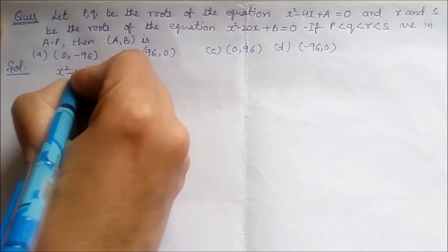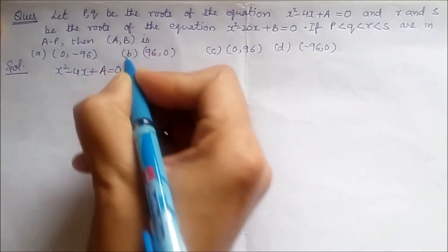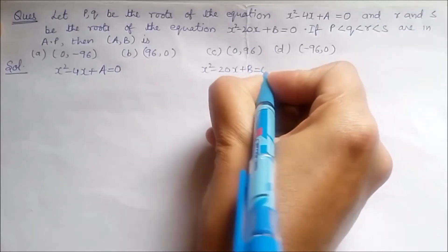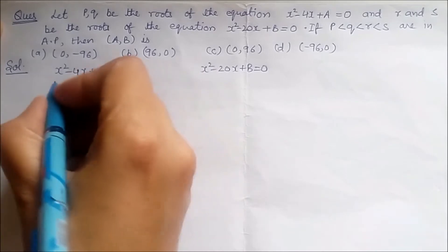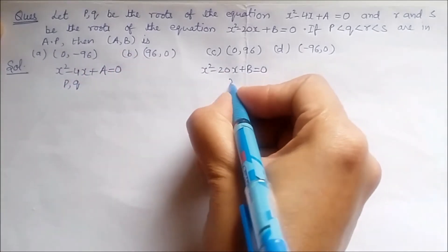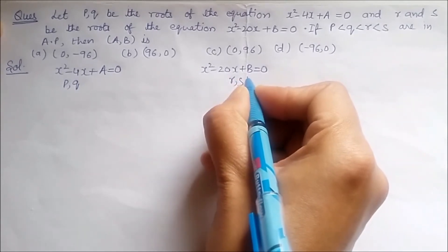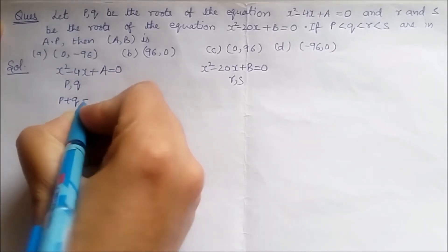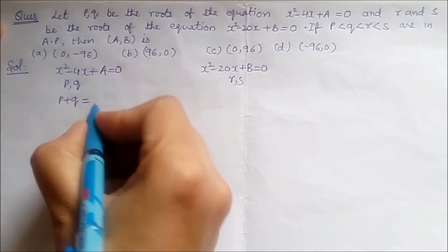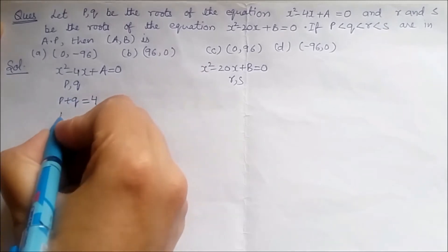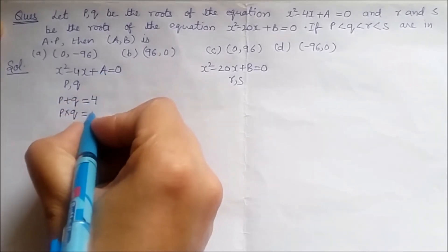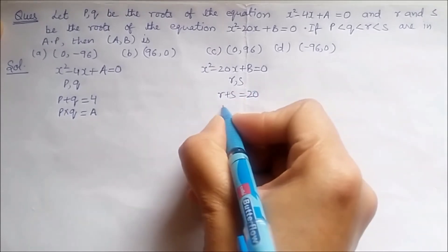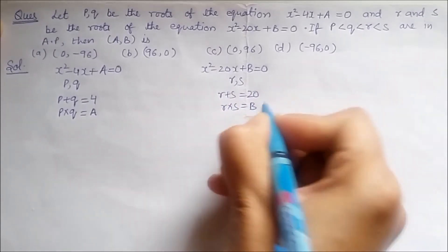We are given two quadratic equations: the first is x² - 4x + a = 0, and the second is x² - 20x + b = 0. For the first equation, p and q are the roots, and for the second, r and s are the roots. Applying Vieta's formulas: p + q = 4, p·q = a, r + s = 20, and r·s = b.